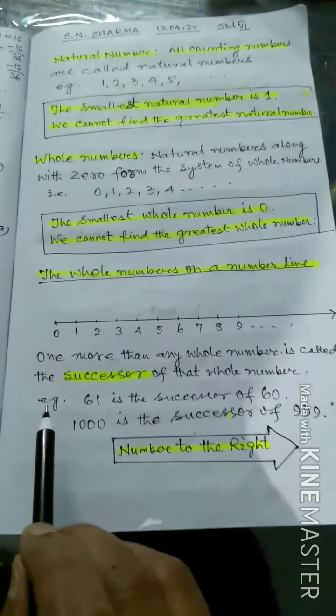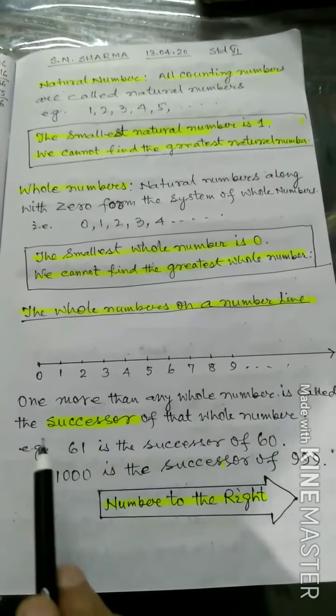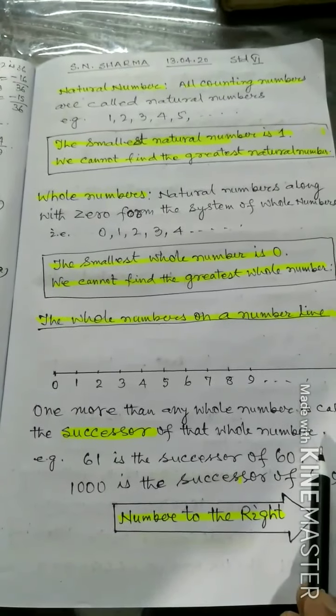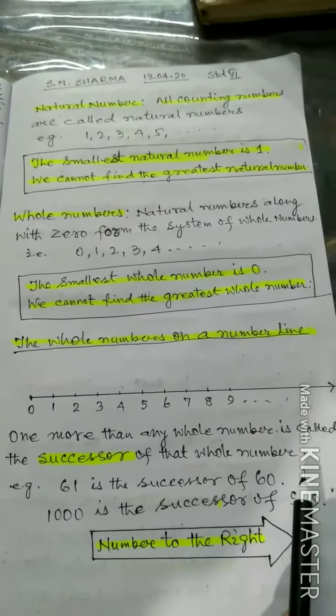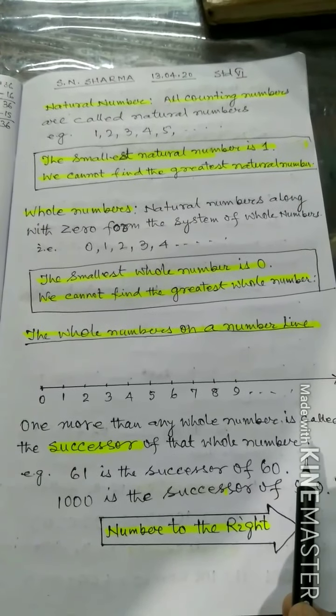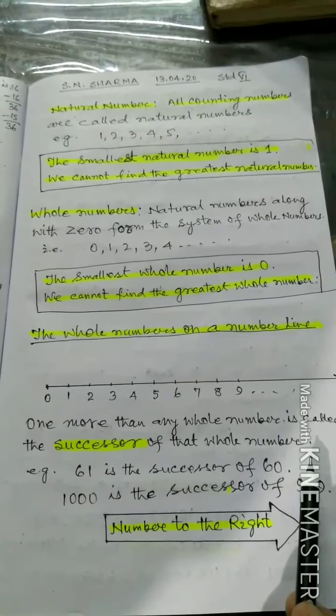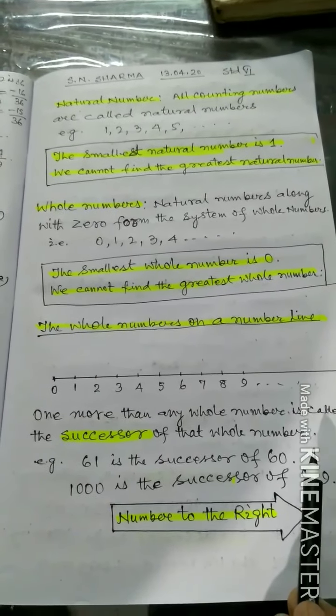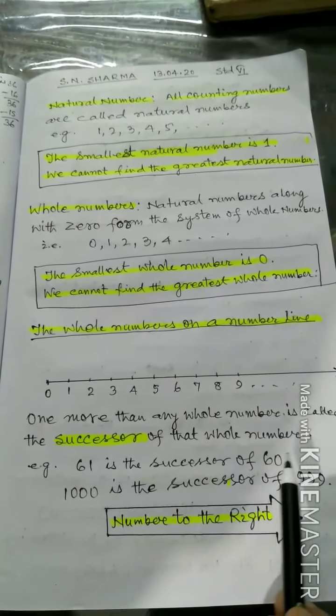Now, one more than any whole number is called the successor of that whole number. Successor. You have learned in LKG and UKG, what comes after the number? Similarly, the number is called successor.